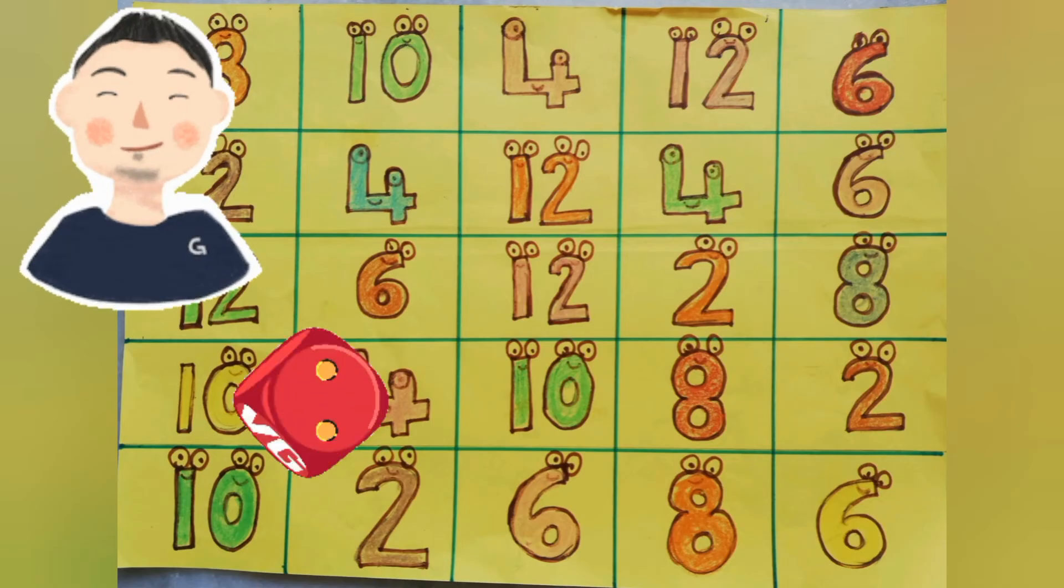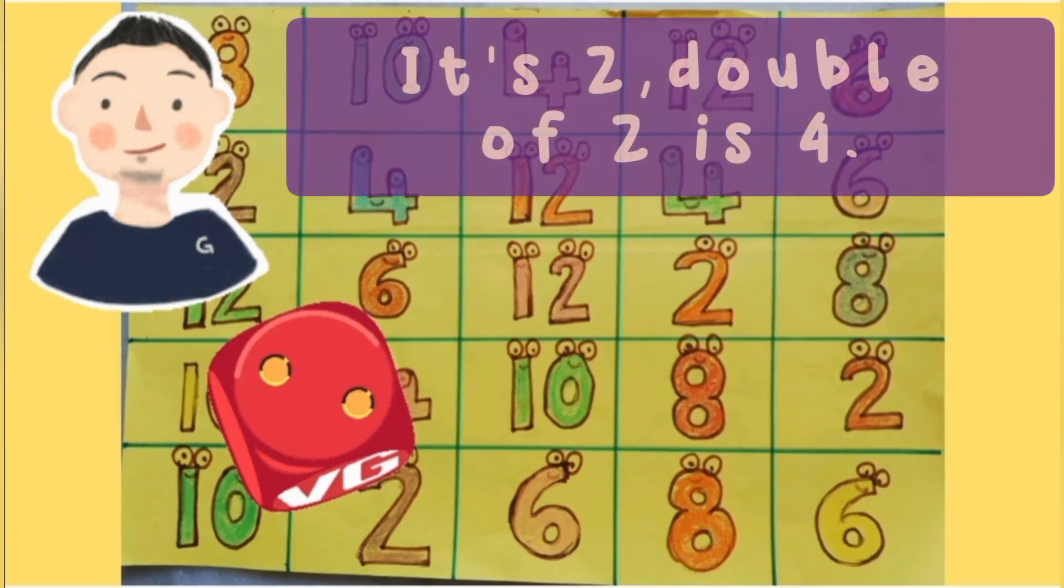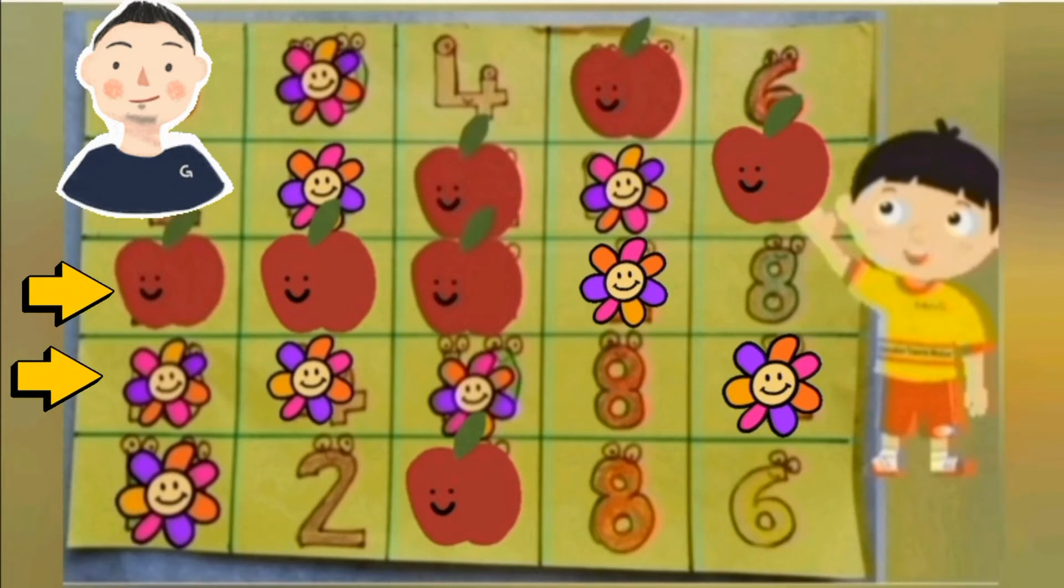My turn. It's two. Double of two is four. Can we now mark all the fours on the board? As only two rows are left, there are no fours to mark. That's okay.